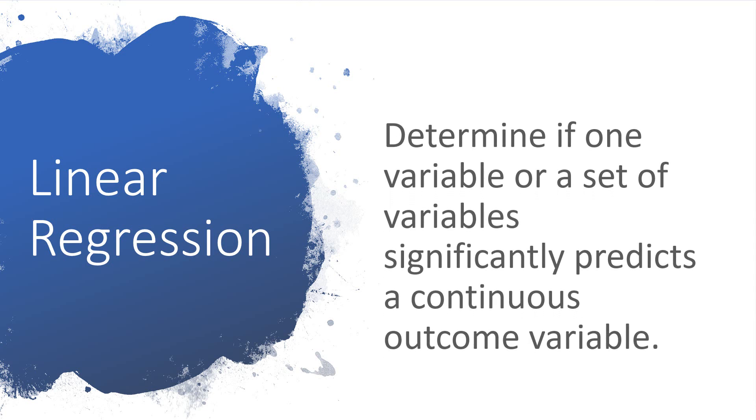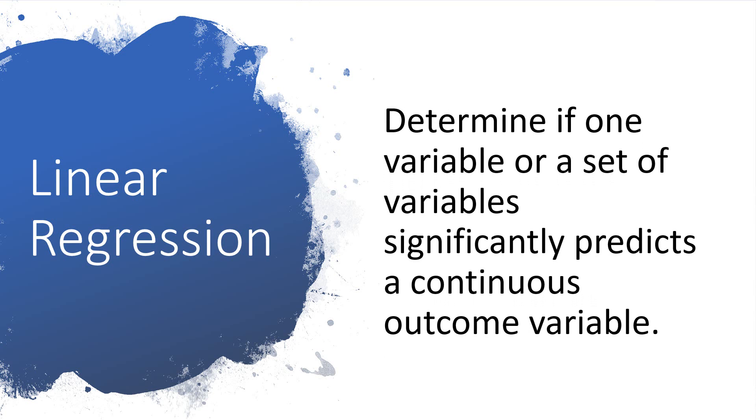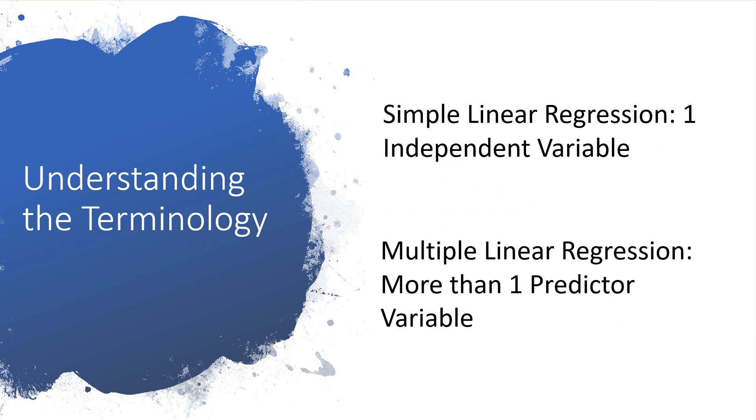Linear regression is a type of statistical analysis used to determine if one variable or a set of variables significantly predicts a continuous outcome variable. There are a few terms used for linear regression. When there is only one predictor variable, the analysis is called simple linear regression. When there are multiple predictor variables, you may hear the term multiple regression or multiple linear regression. The procedure is the same in both cases. The only difference is the number of independent variables.